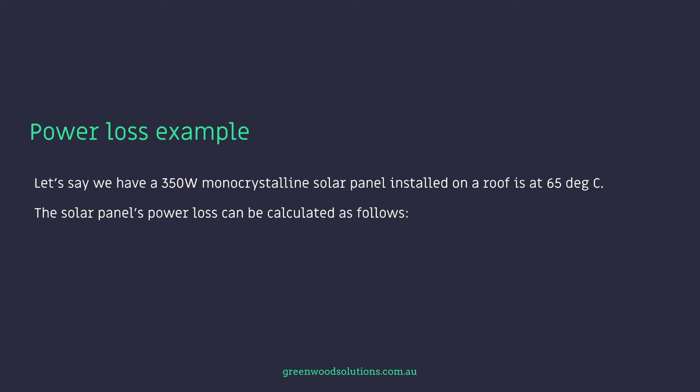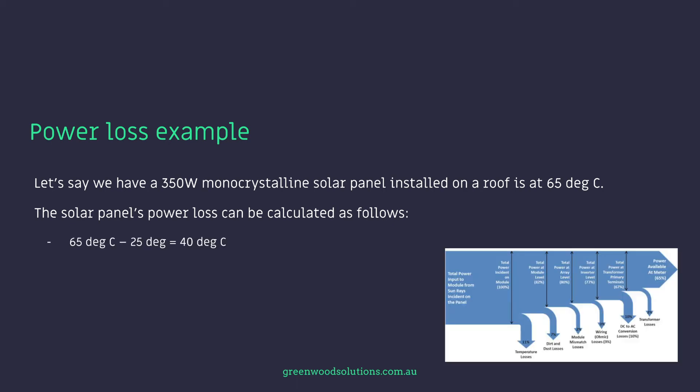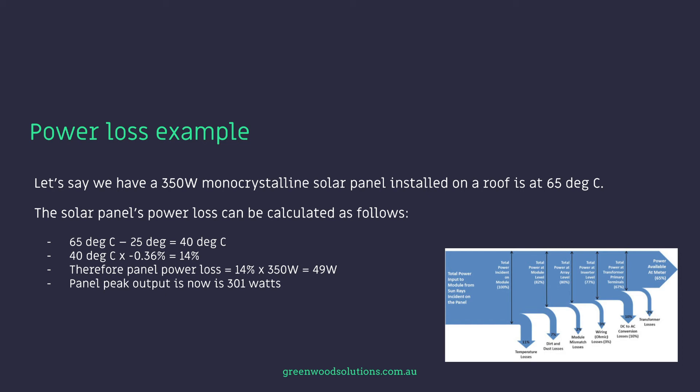Let's say we have a 350 watt monocrystalline solar panel installed on a roof and it's at 65°C. The solar panel's power loss can be calculated as follows: 65°C minus 25°C equals 40°C. 40°C times 0.36% equals 14%. Therefore the panel power loss is 14%, and multiplying that by 350 watts gives a loss of 49 watts. So the panel peak output is now 301 watts in this example.